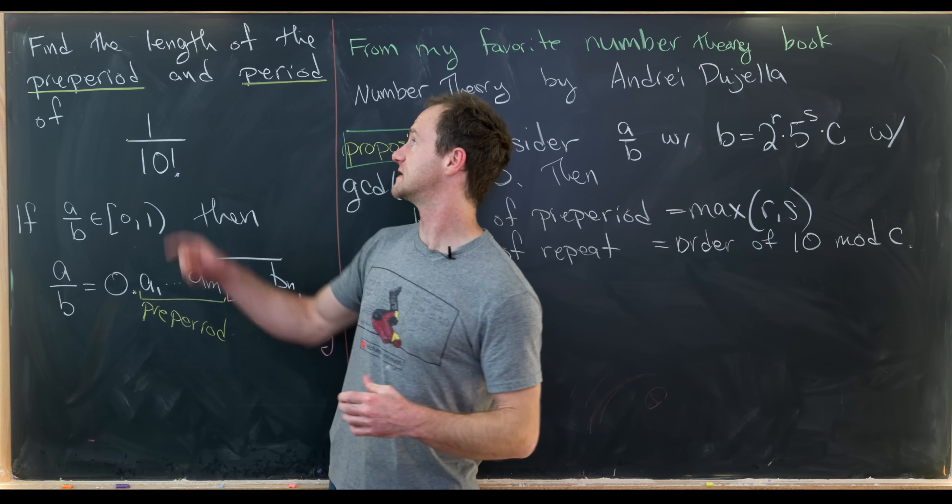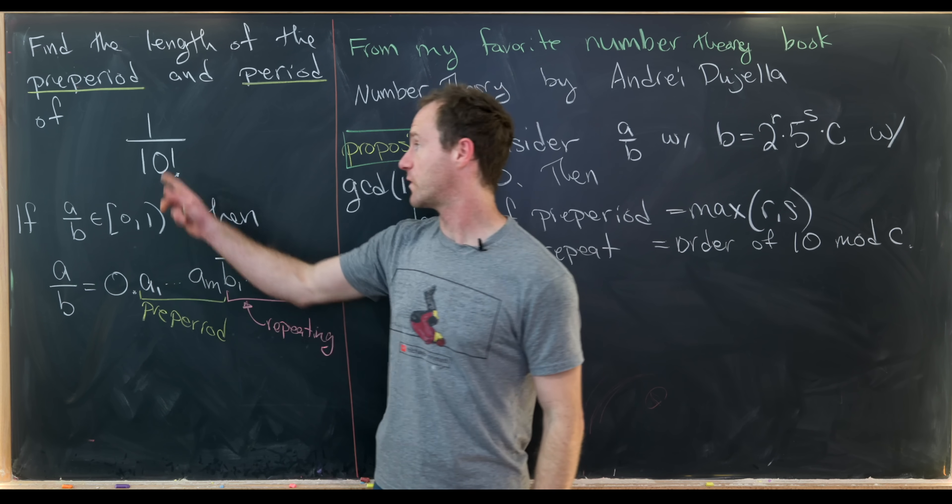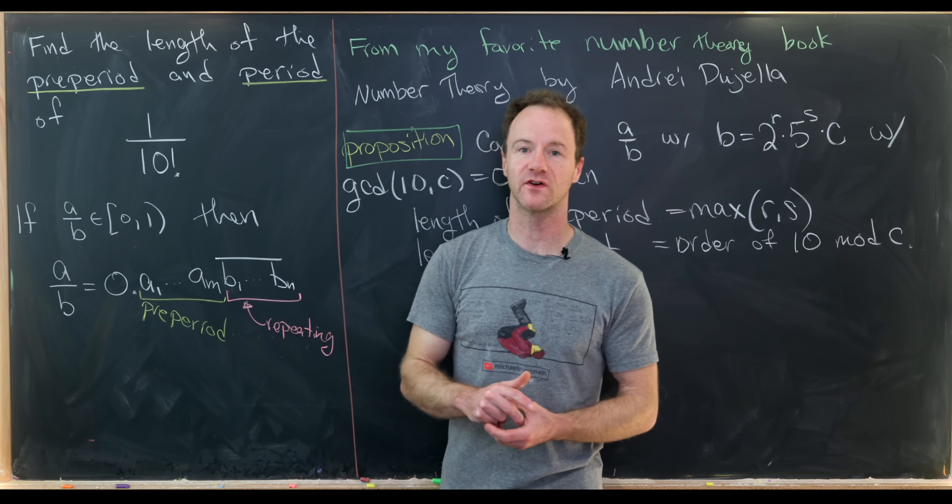So our goal is to find the length of the pre-period and the period for this rational number 1 over 10 factorial.